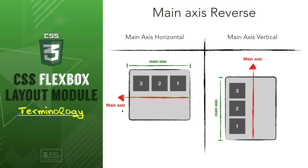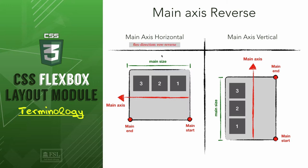We can reverse the start and the end: if it is horizontal, the main start will become right to left instead of left to right. Same if the main axis is vertical — top to bottom becomes bottom to top. We can achieve that using the same flex-direction property, but instead of row we use row-reverse, and column-reverse for the vertical main axis. By doing that, the items will be reversed because flex items follow the main start and main end of the main axis.